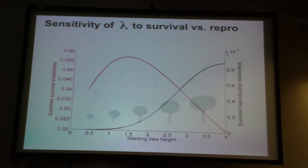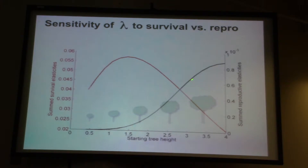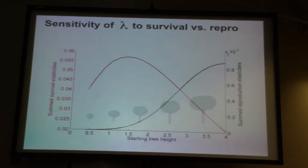So how does that work? The way it works can be discerned if we look at the sensitivity of lambda — the tree population — to survival and reproduction. If you do a sensitivity analysis of the tree populations from very small trees up to bigger trees, these graphs show how sensitive lambda or tree population growth rate is to survival, and how sensitive lambda is to reproduction as trees get larger and larger. Survival elasticities are very high when trees are smaller — trees that are younger don't reproduce, so lambda is not very sensitive to reproduction at small tree heights. As trees get bigger, survival becomes less important and reproduction becomes much more important.